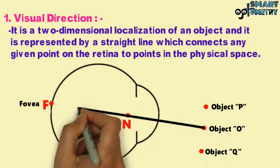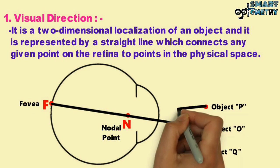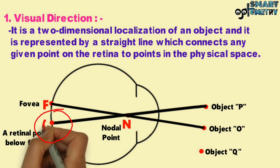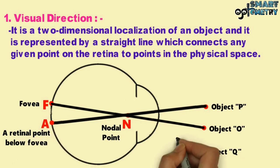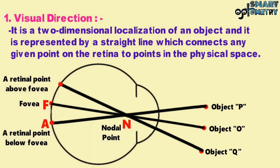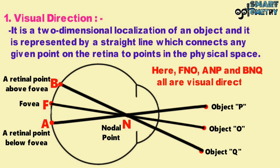The line of sight from object O joins the fovea at point F while passing through the nodal point N. The line of sight from object P joins the retinal point below the fovea at point A while passing through the nodal point N. The line of sight from object Q joins the retinal point above the fovea at point B while passing through the nodal point N. The lines of sight F-O, A-P, and B-Q are all visual directions.